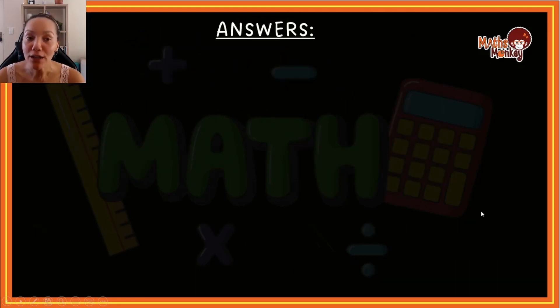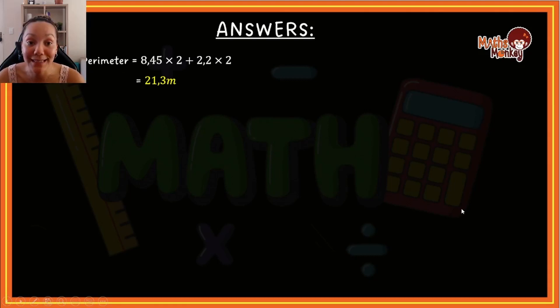All right, so let's look at your answers. The first rectangle, the perimeter is 8.45 × 2 + 2.2 × 2, and that will give you 21.3 meters. The area is then 8.45 × 2.2, and your answer will be 18.59 meters squared. Remember, check that you're using the right formula, that you're putting in the values in the correct places, and that you're also getting the units correct.